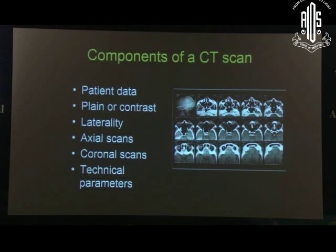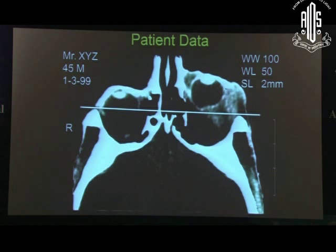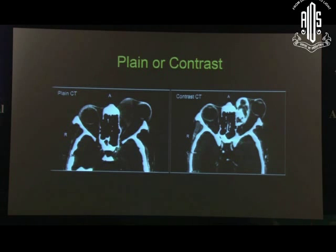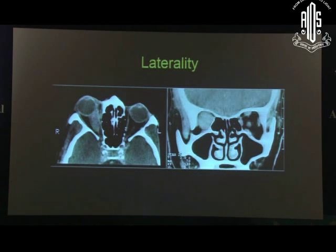When a patient comes with a surprising CT scan, you must identify the patient first. Also look at whether the scan is plain or contrast, look at axial scans, coronal scans, and then the technical parameters. Patient data is generally on the top left side — patient's name, age, gender and date of birth. On the top right, if the radiologist is particular, the window width, window level and slice thickness are mentioned. Plain or contrast is denoted by 'P' or 'C', or may be written out fully. The Hounsfield units within the tissue are also necessarily mentioned.